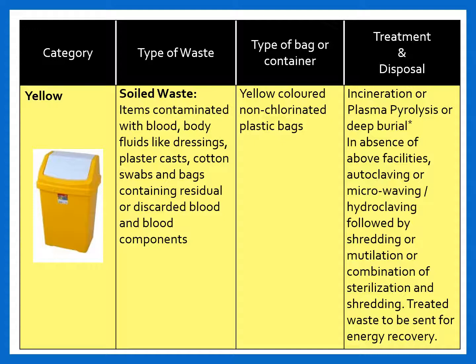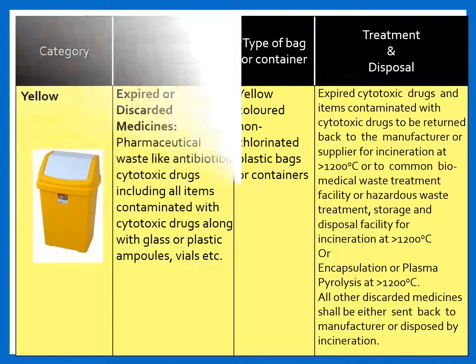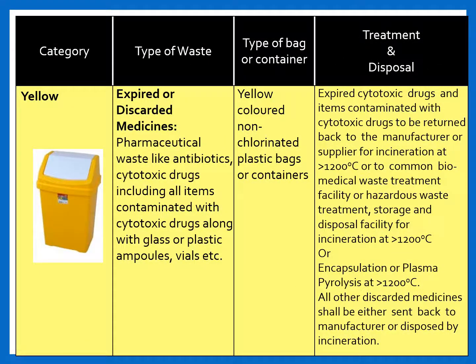To recapture everything: human or animal anatomical waste and all soiled waste will be collected in yellow colored non-chlorinated plastic bags and then disposed of in yellow colored containers. Other types of waste discarded in yellow containers include expired or discarded medicines.